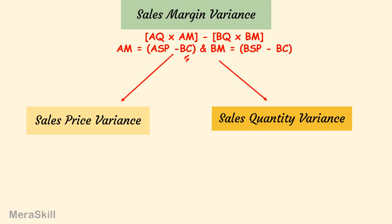That is the margin per unit into the actual quantity, and the budgeted margin per unit into the budgeted quantity. The budgeted cost may be the marginal cost or the total cost — marginal cost if you are using marginal costing, total cost if you absorb the fixed overhead under absorption costing.